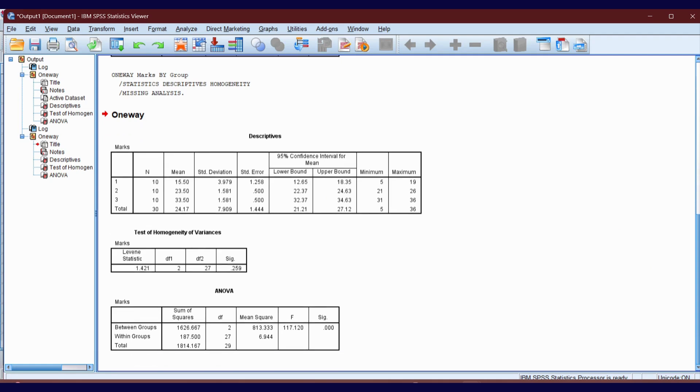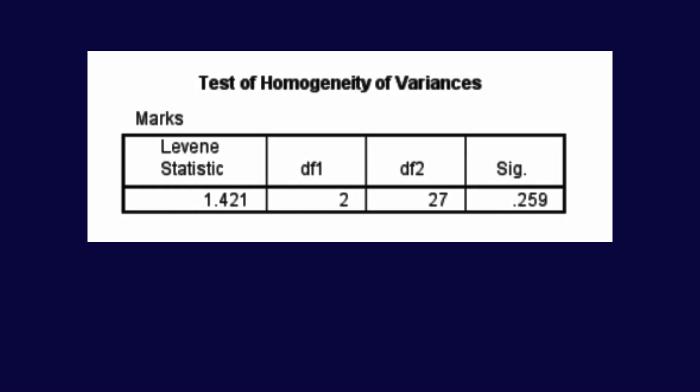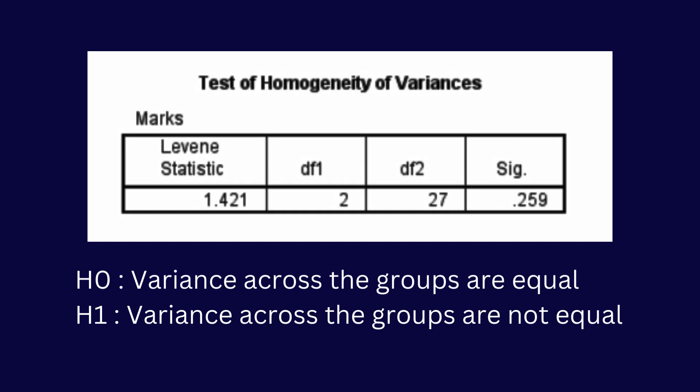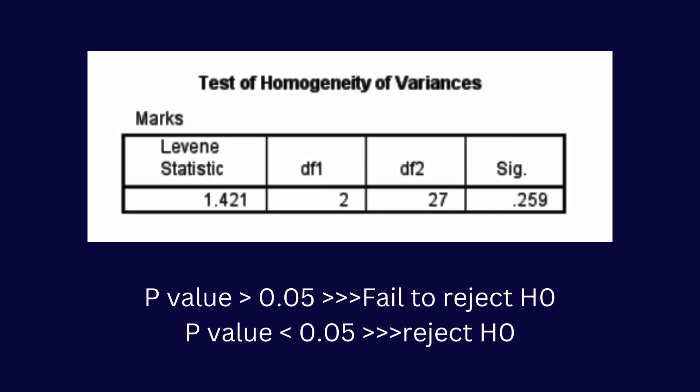This is our output. Let's interpret it. In the Levene's test table, the Levene statistic is used to test the null hypothesis that the variance across the groups are equal. The alternative hypothesis is that the variance across the groups are not equal. If the p-value is greater than 0.05, you fail to reject the null hypothesis. If the p-value is less than 0.05, you reject the null hypothesis. In this case, the p-value of 0.259 is greater than 0.05, meaning we fail to reject the null hypothesis. This indicates there is no significant evidence to suggest that the variances are different across the groups.